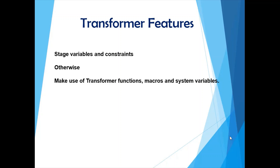Make use of transformer functions, macros, and system variables. There are many functions in transformers — make optimum use of those instead of adding additional stages, since you're already using a transformer. Use macros and system variables like the job start timestamp, which can be used for ETL audit tables to record when the job last ran, instead of doing it in some other complicated way.